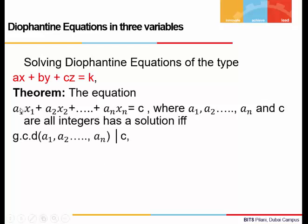The theorem states that if we have a single equation in n unknown variables x1, x2, ..., xn, and the equation is a1·x1 + a2·x2 + ... + an·xn = c, where all the aᵢ's are integers and the right-hand side c is also an integer, then such an equation has a solution if and only if the gcd of all the coefficients aᵢ divides the right-hand side c.